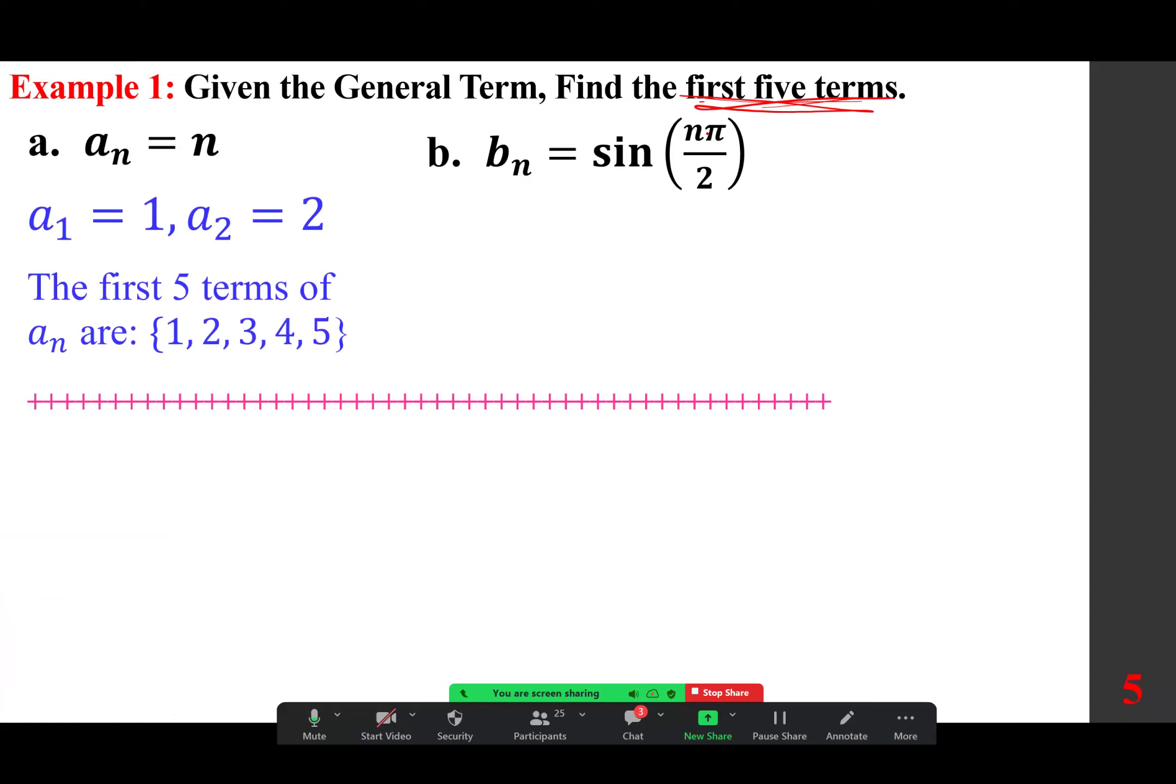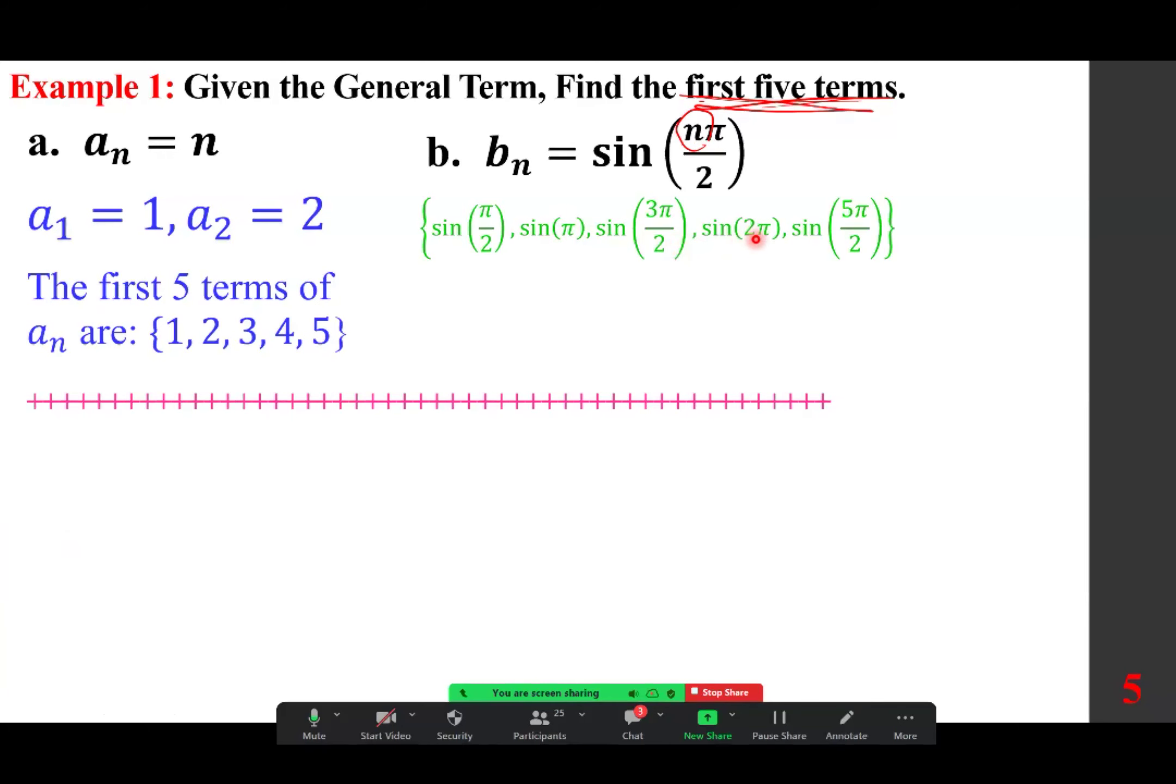We are going to do the same thing here. We're going to replace the n with 1, 2, 3, 4, 5. And what happens, we get sine of pi over 2. This one is sine of 2 pi over 2, sine of 3 pi over 2. This is sine of 4 pi over 2, sine of 5 pi over 2.